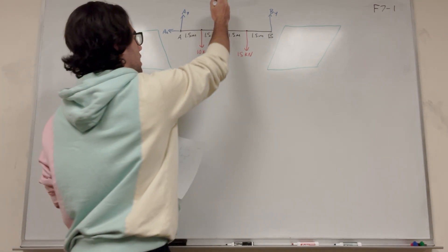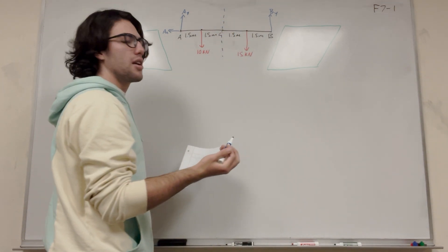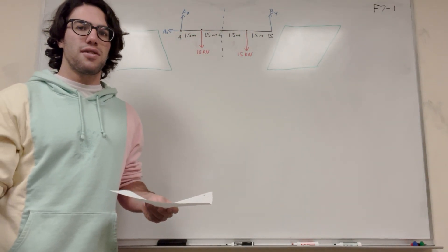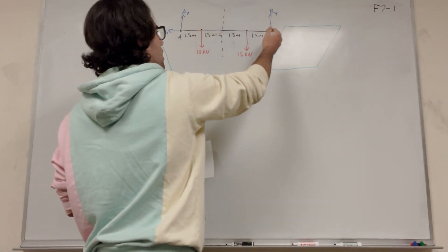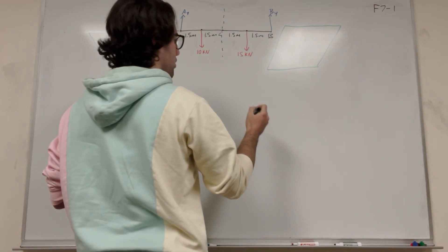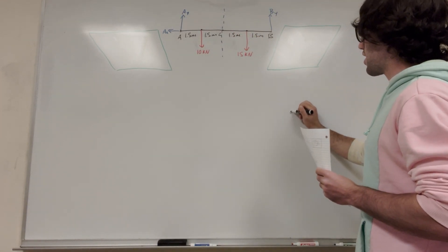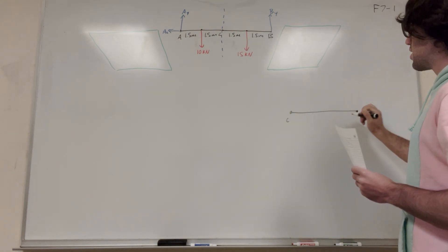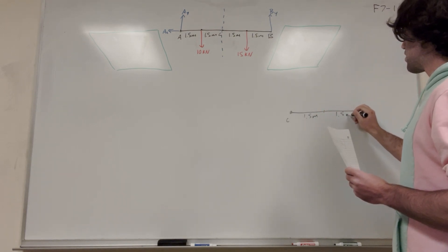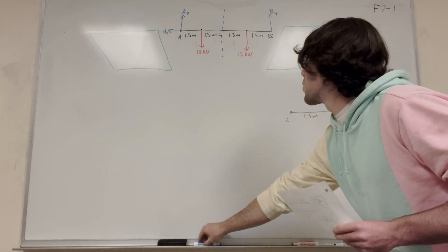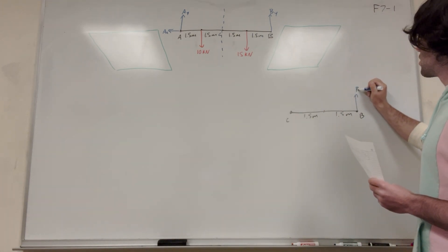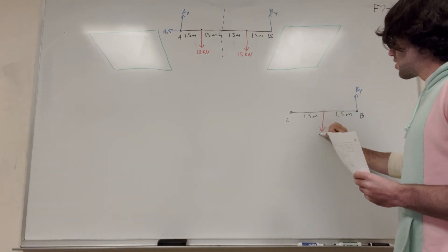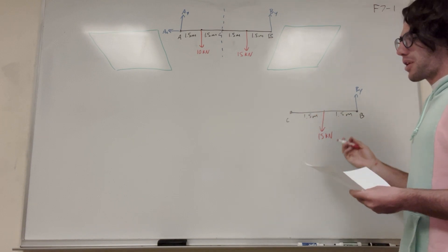We're going to take a cut at C and choose one part to analyze. I'm going to choose the right side — you could choose either side, it wouldn't make much of a difference. So our new free body diagram is just from C to the right, from C over to B, and each segment is 1.5 meters.